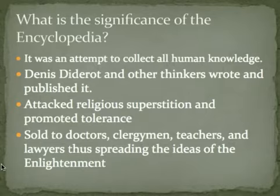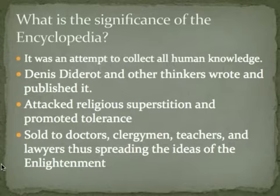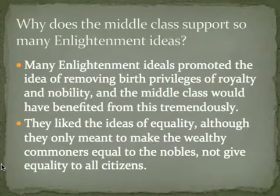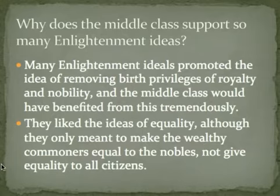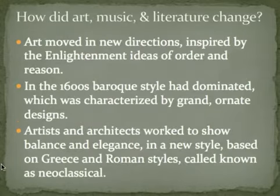The Encyclopedia was significant because it attempted to collect all human knowledge, attacked religious superstition, promoted tolerance, and was sold to doctors, clergymen, teachers, and lawyers, doing much to spread Enlightenment ideals. The middle class supported Enlightenment ideas because many of them promoted removing birthright privileges of royalty and nobility. However, when the middle class spoke of equality, they meant wealthy commoners being equal to nobility — not making all citizens equal to each other.